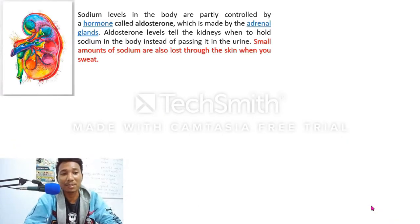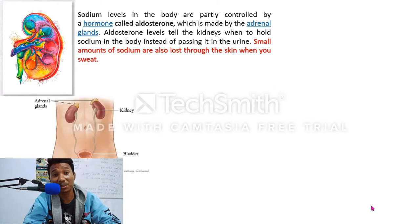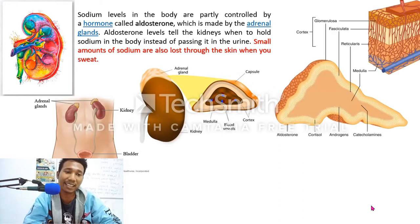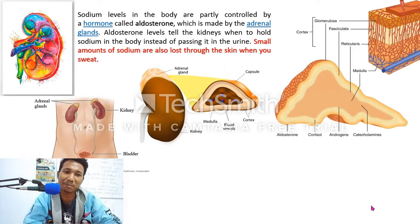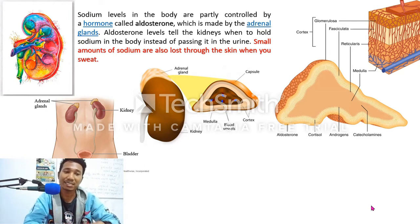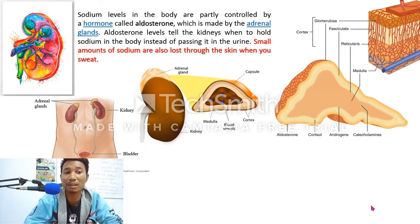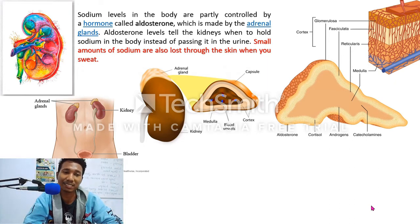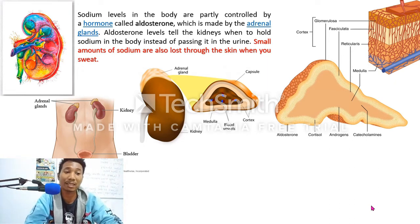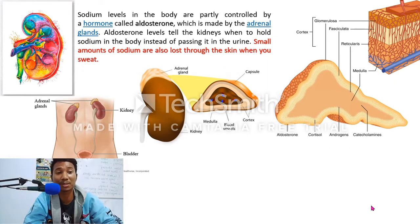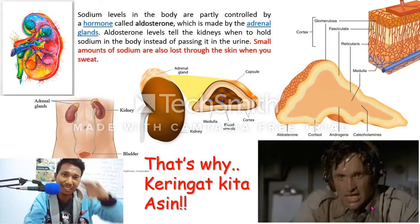Sodium levels in the body are partly controlled by a hormone called aldosterone, which is made by the adrenal glands near our kidneys. Aldosterone levels tell the kidneys when to hold sodium in our body instead of passing it out in the urine. Small amounts of sodium are also lost through the skin when you sweat.